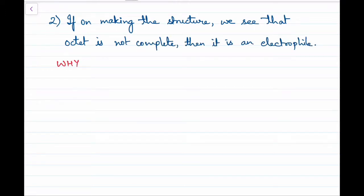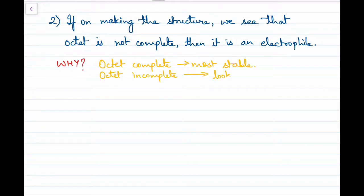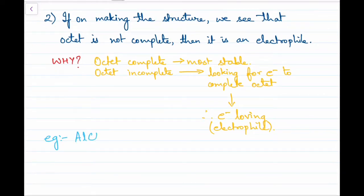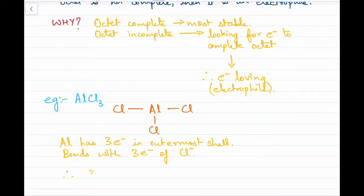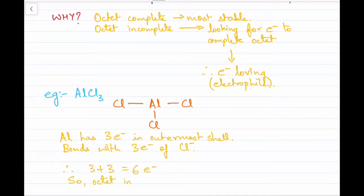When the octet for a molecule is complete, it is in its most stable state. But when the octet is incomplete, the central atom is looking for electrons to complete its octet and achieve stability. Since it is looking for electrons, it is electron-loving — that is, an electrophile. For example, AlCl3: aluminium has three electrons in its outermost shell, forms covalent bonds with chlorine, and now has six electrons — less than eight.